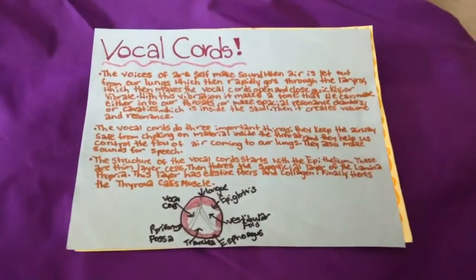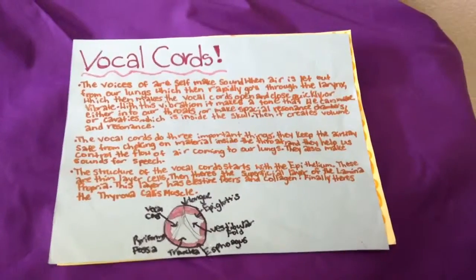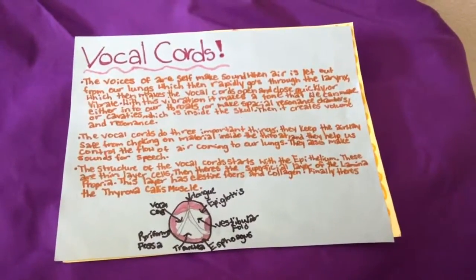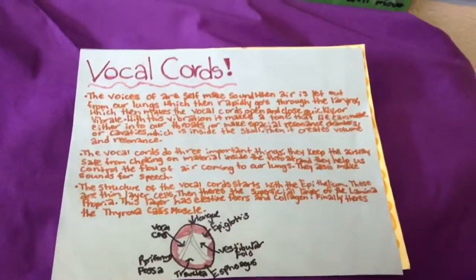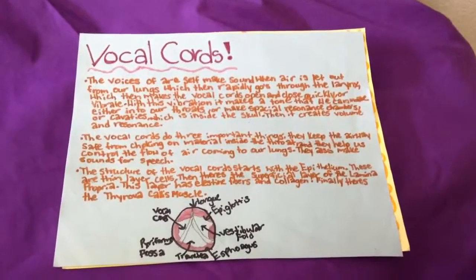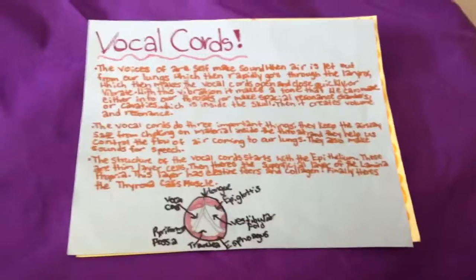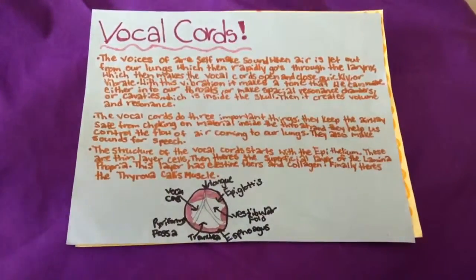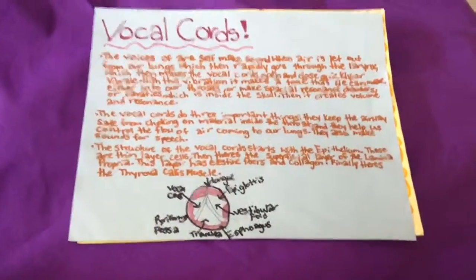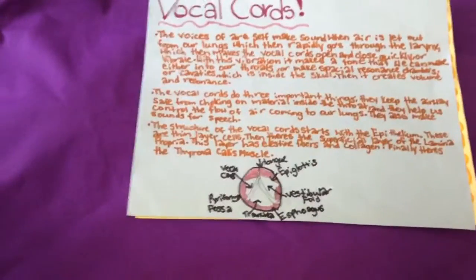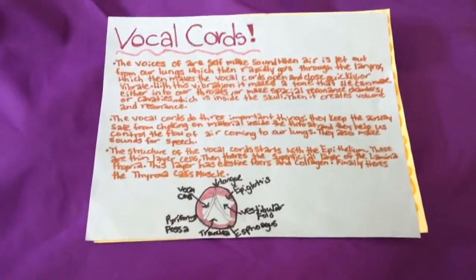The voices of ourselves make sound when air is let out from our lungs, which then rapidly goes through the larynx, which then makes the vocal cords open and close quickly, or vibrate. With this vibration, it makes a tone that we can shape in our throats, creating spatial resonance chambers or cavities inside the skull, which then creates volume and resonance. The vocal cords do three important things: they keep the airway safe from choking on material inside the throat, they help us control the flow of air coming to our lungs, and they make sounds for speech.